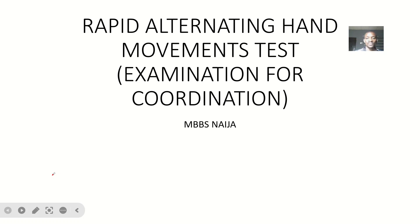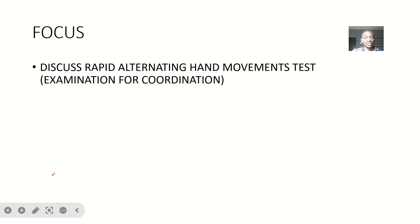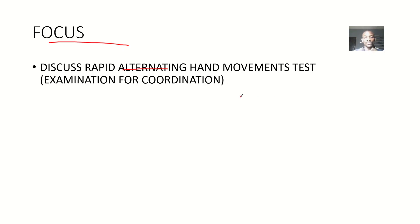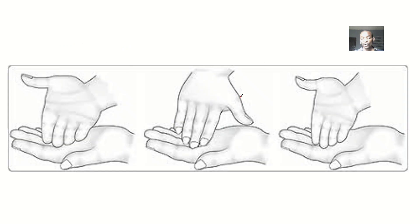I'll be talking about the rapid alternating hand movement test, which is a method for examination of coordination. Our focus is the rapid alternating hand movement test, which is used to assess coordination.